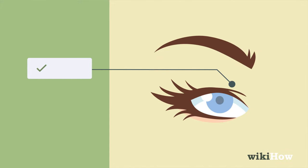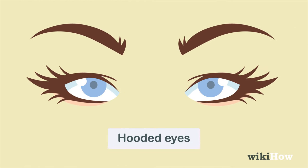If your upper eyelids have a crease, but you can't see it when your eyes are fully open, that means you have hooded eyes.